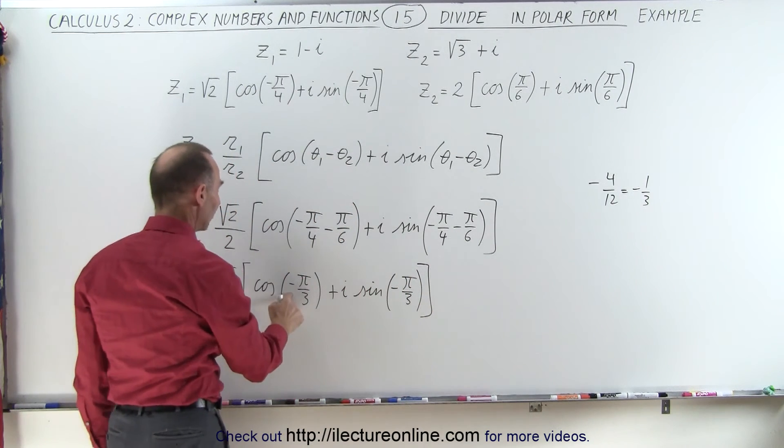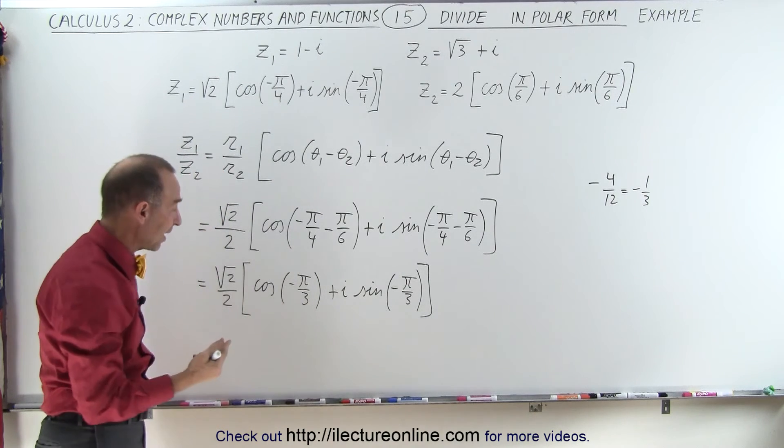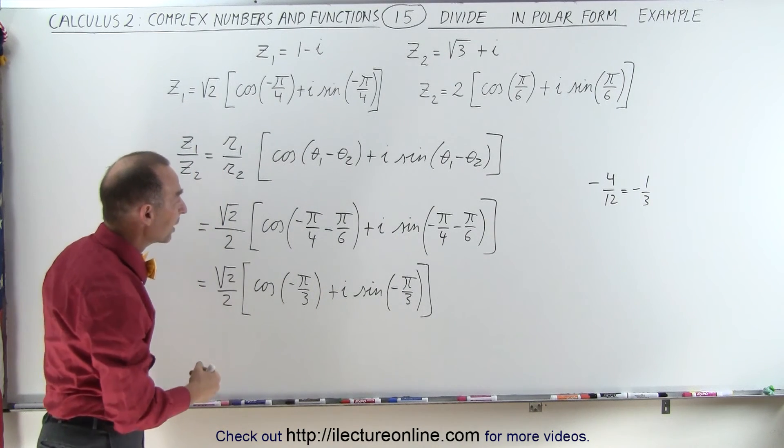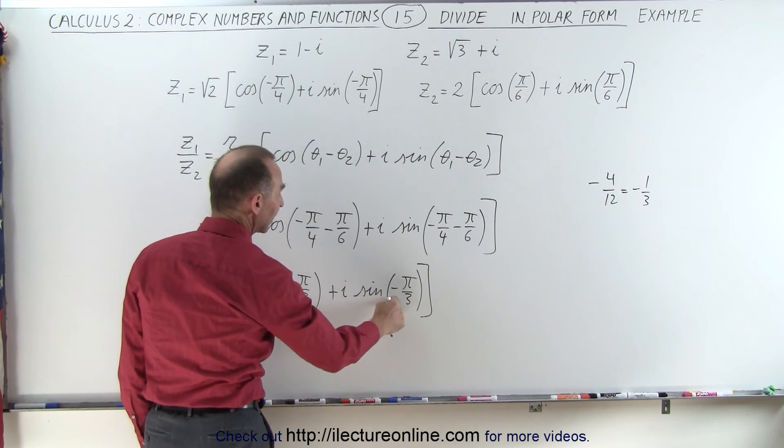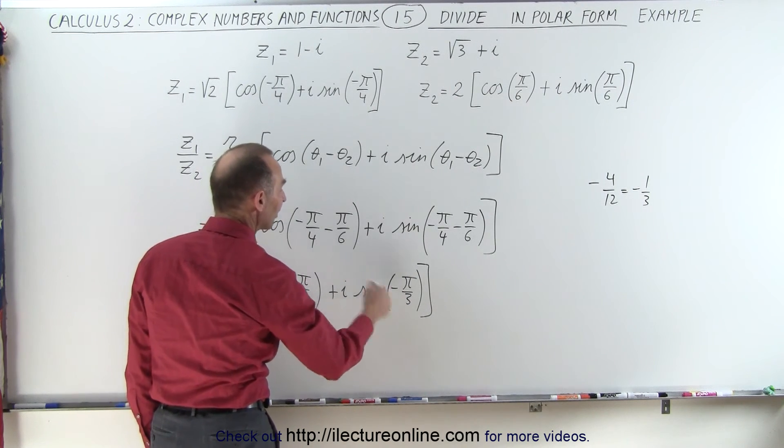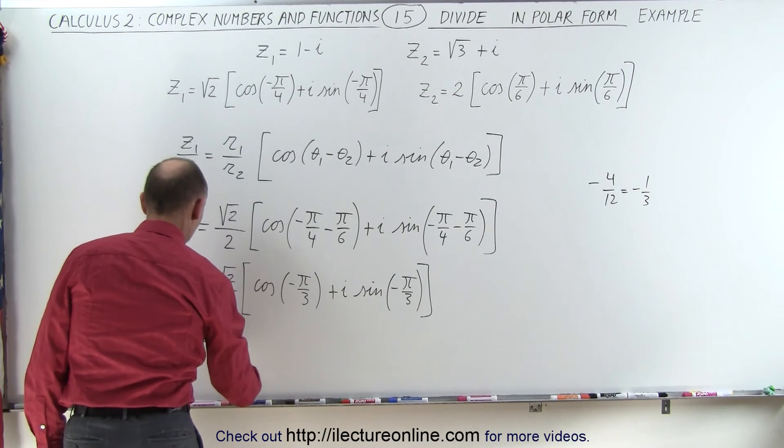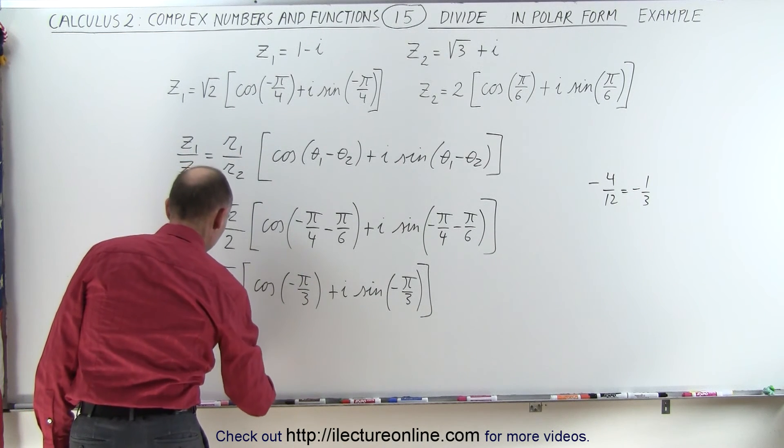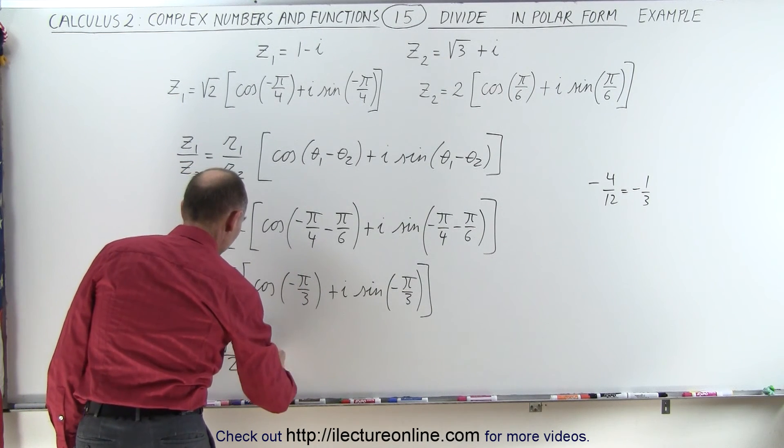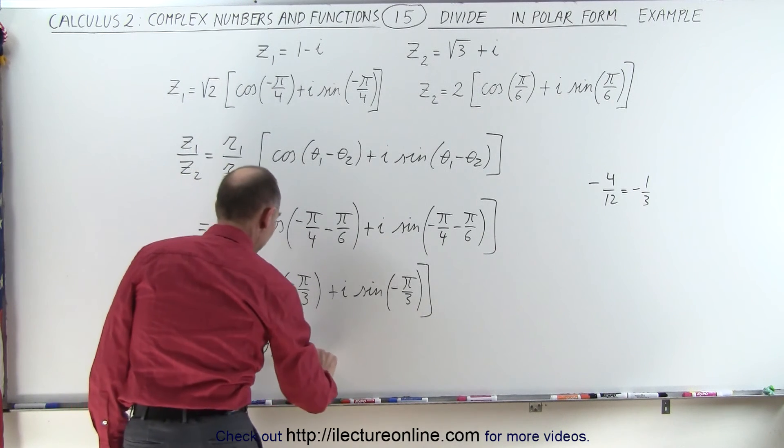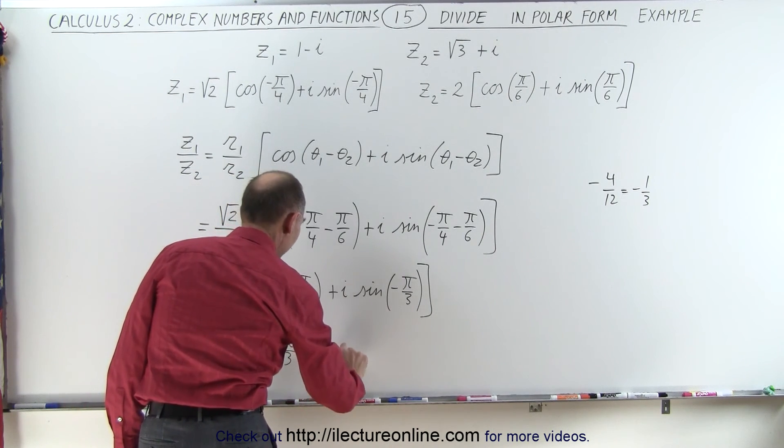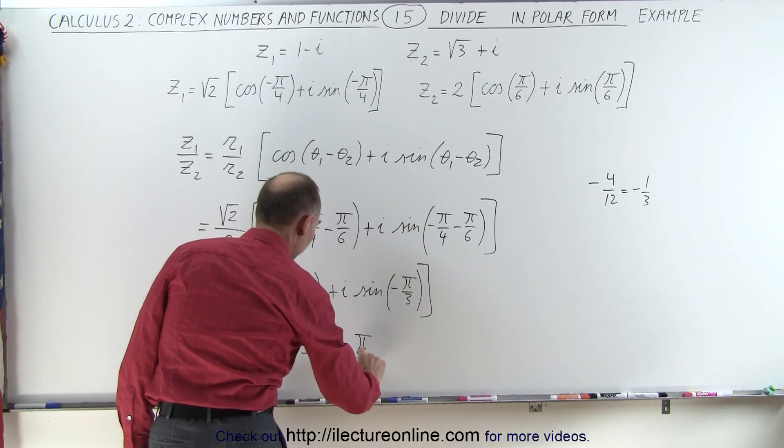Now we can simplify the negative angles. The cosine of a negative angle is the same as the cosine of a positive angle, and the sine of a negative angle is the negative of the sine of the positive angle. So this can be written as the square root of 2 over 2 times the cosine of pi over 3 minus i times the sine of pi over 3.